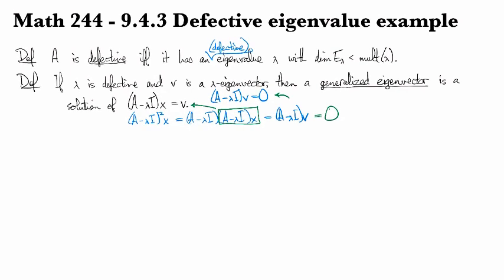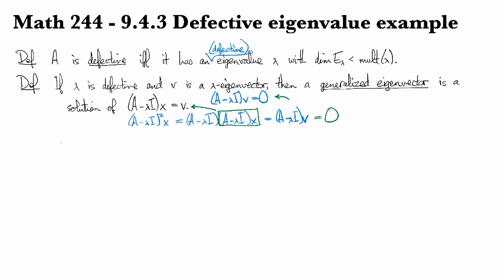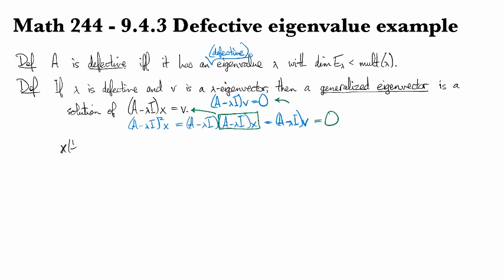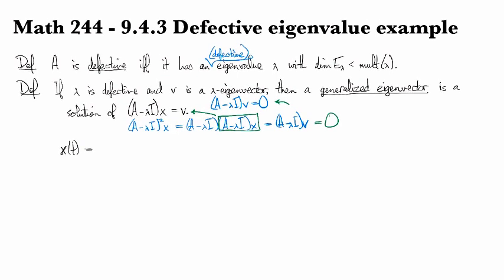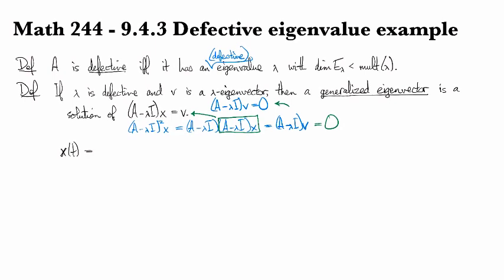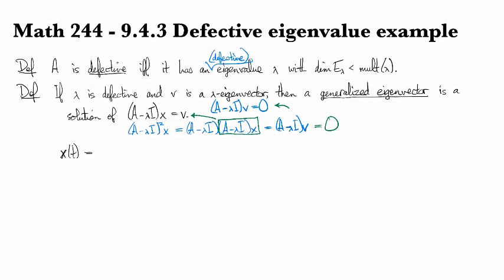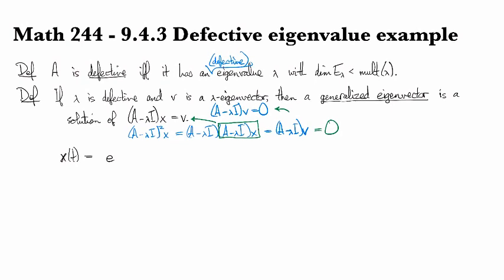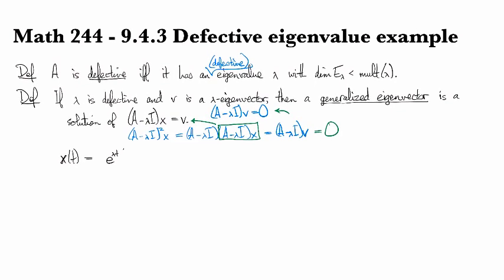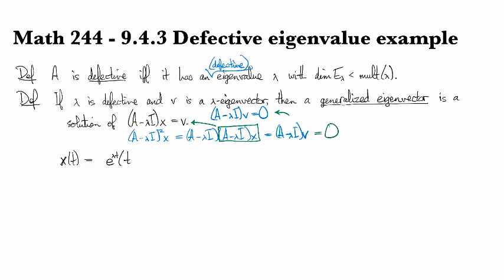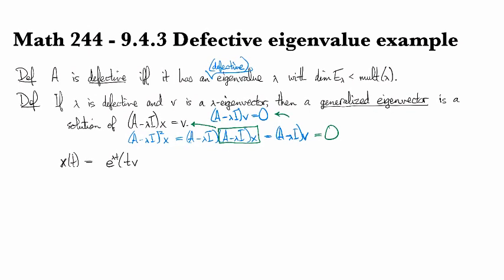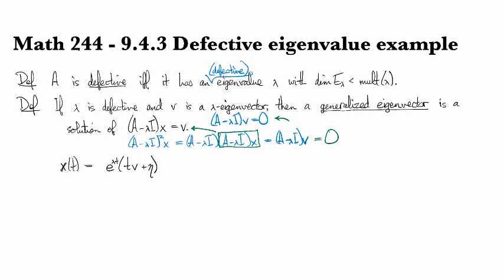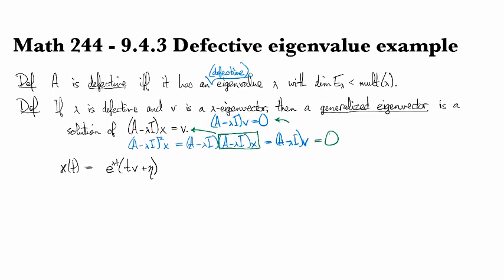In cases like this, we expect to find a solution that looks like this: e^(λt) times (t · V + η), where V is our original eigenvector and η is our generalized eigenvector.